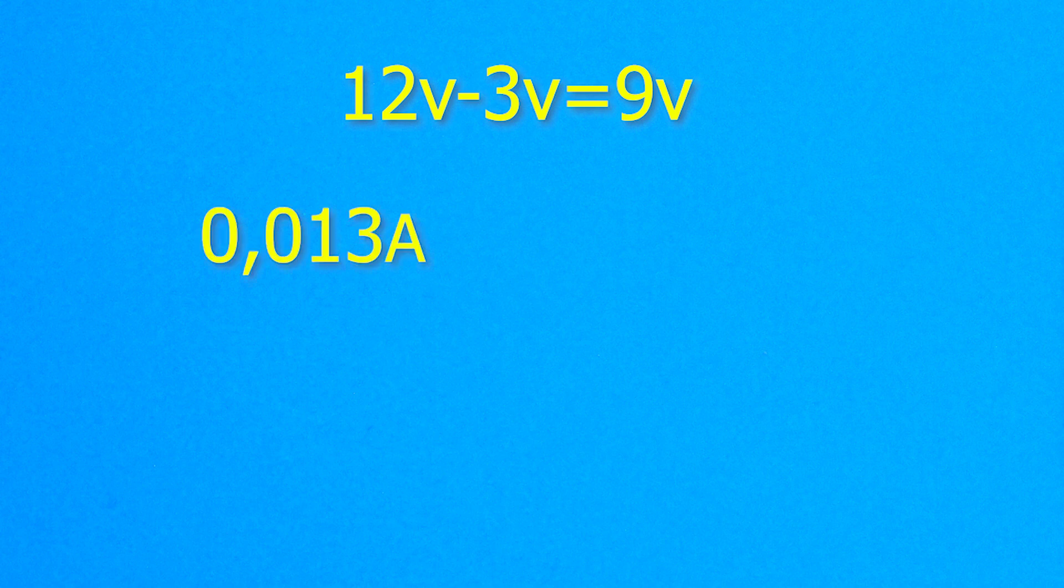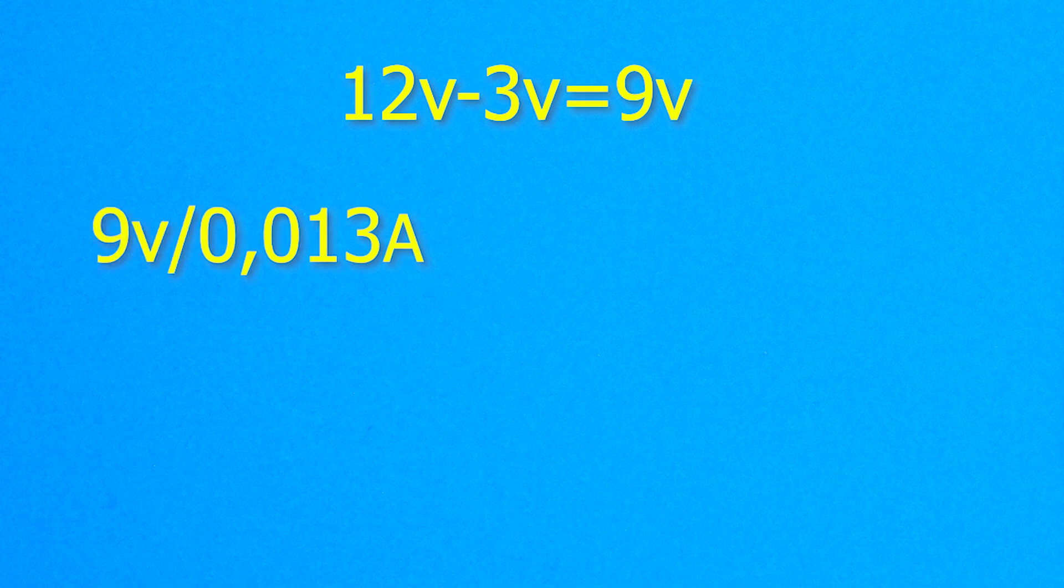Then we take the current consumption of the LED, 13 milliamps, and convert to amps. It turns out 0.013 amps. Then we divide 9 volts by the current strength, and we get 692 ohms. This will be the resistance of the resistor.